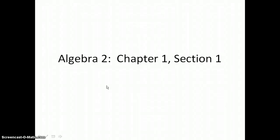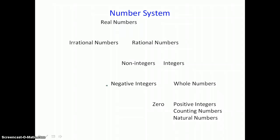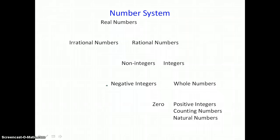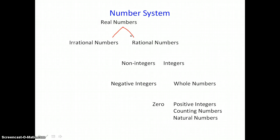Our lesson today is Chapter 1, Section 1, and we're going to start by discussing the number system. Real numbers are found at the top of our number system. Real numbers can be divided into two groups: the irrational numbers and the rational numbers.